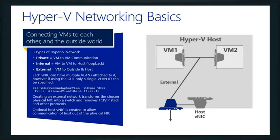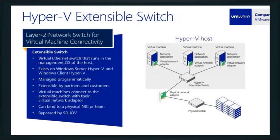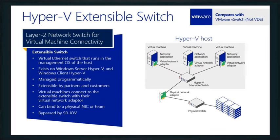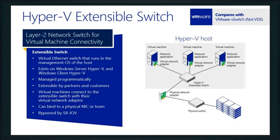We have a layer 2 networking switch, and this is where you're going to see some big differences between how we do things compared to VMware. The Hyper-V extensible switch built into Hyper-V servers compared to VMware's vSwitch — it's not the virtual distributed switch that you have in VMware. To do those types of things, that's where VMM — or in VMware's case, vCenter — comes into play.